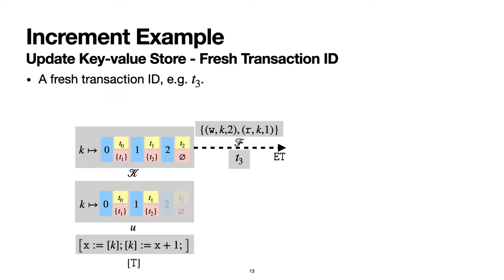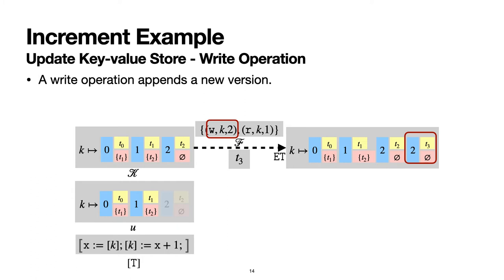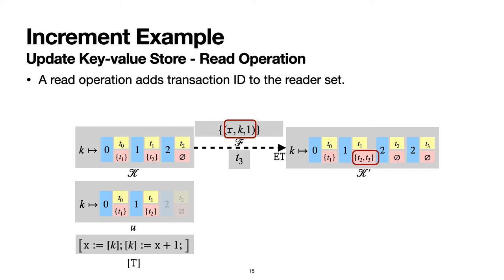If the check passes, we are ready to commit the fingerprint. We pick a fresh transaction ID—for example, T3. For any write in the fingerprint, it appends a new version with the writer set to the new transaction ID. For reads, it adds the transaction ID to the reader set.